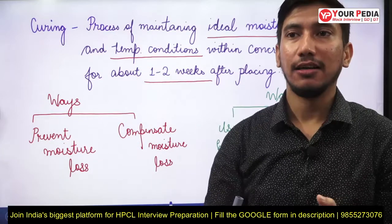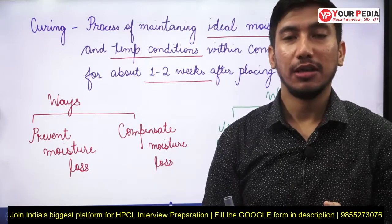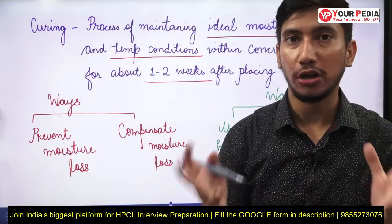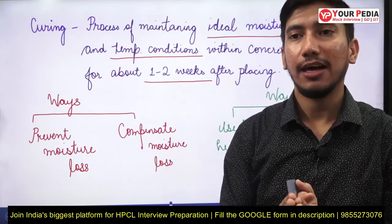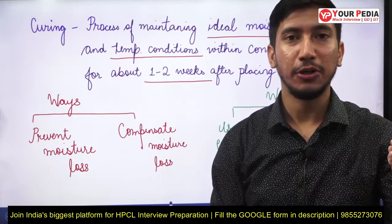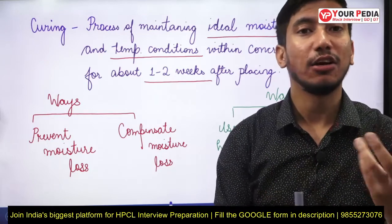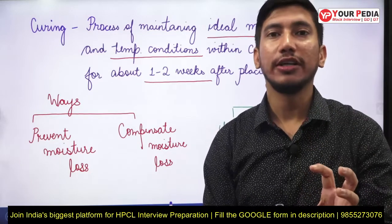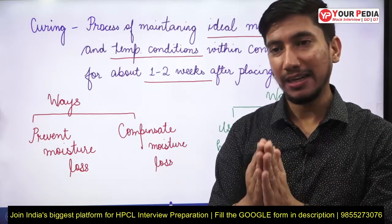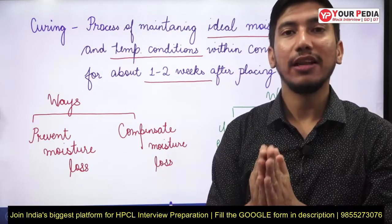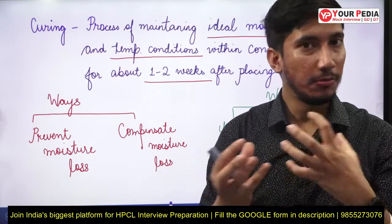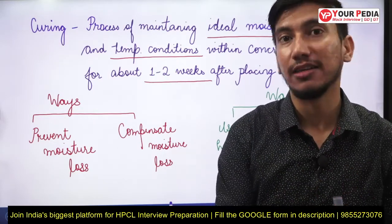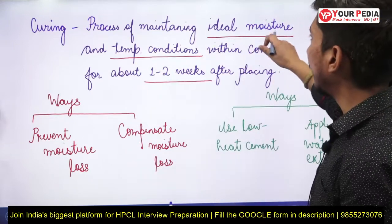Moreover, concrete is placed in the open. In India, temperatures can exceed 40–45°C, and humidity conditions can vary, causing a lot of evaporation losses. Because of this, the moisture inside the concrete mix can vary, and a condition may arise where the water required for hydration is simply not available — and we don't want that.